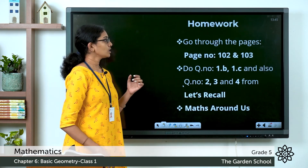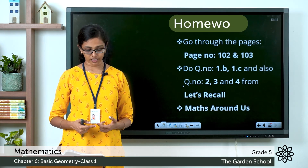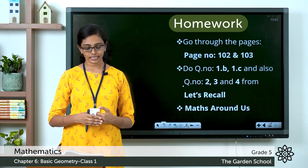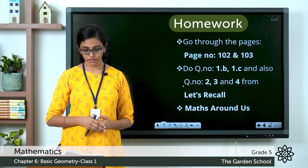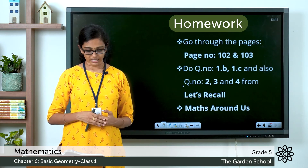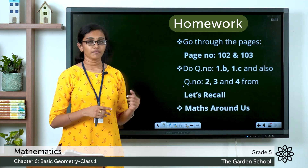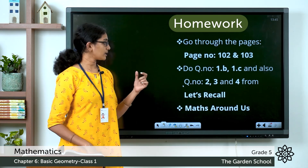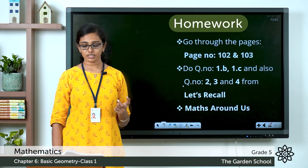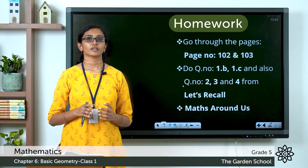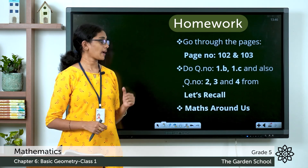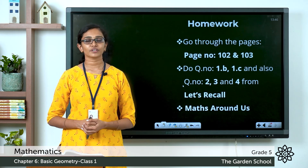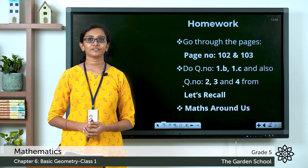Now go through these topics on pages 102 and 103 of your textbook. Go through the topic once again, then answer questions 1, 2, 3, and 4. Question 1a has already been discussed in class; complete questions 1b, 1c, and also questions 2, 3, and 4 on page 103. You can also see the heading 'Maths Around Us' — please go through that as well. That's all for today, children. We will meet in the next class. Bye!